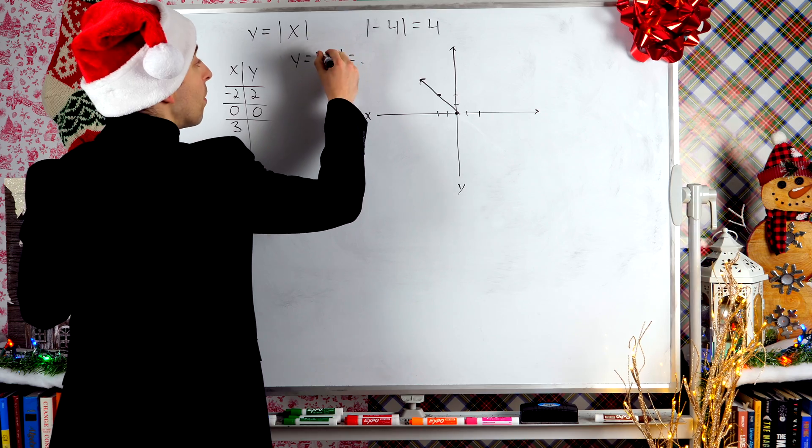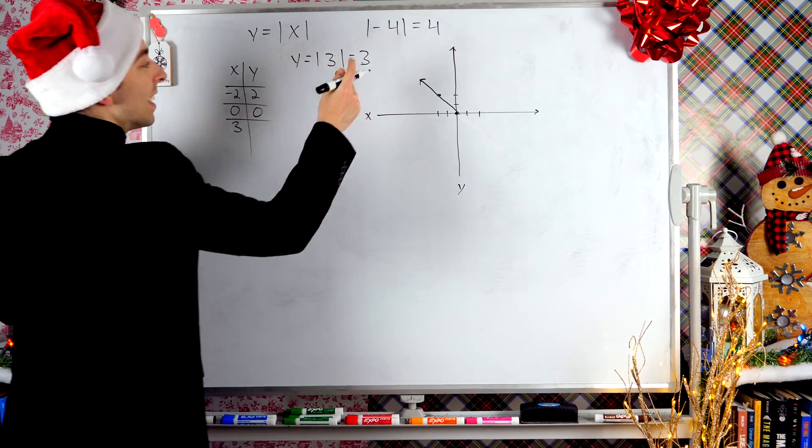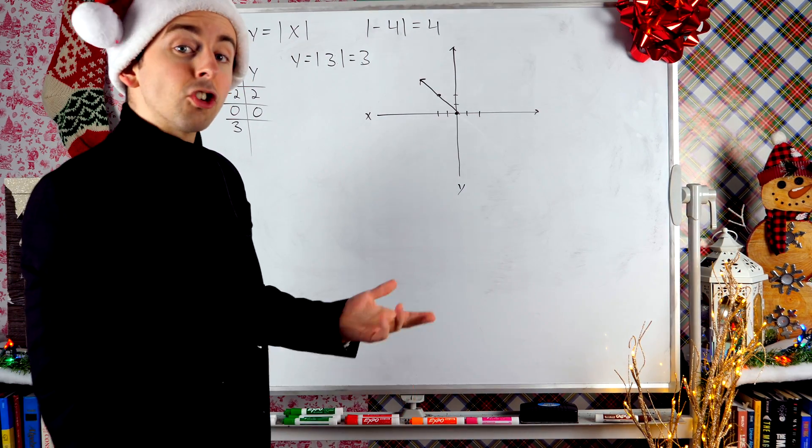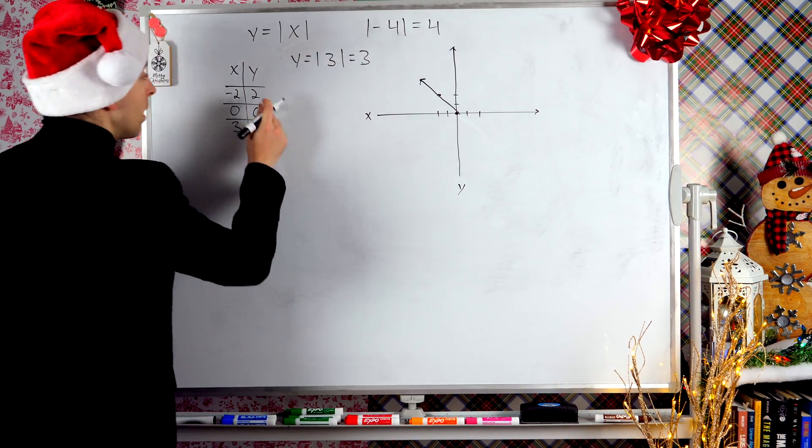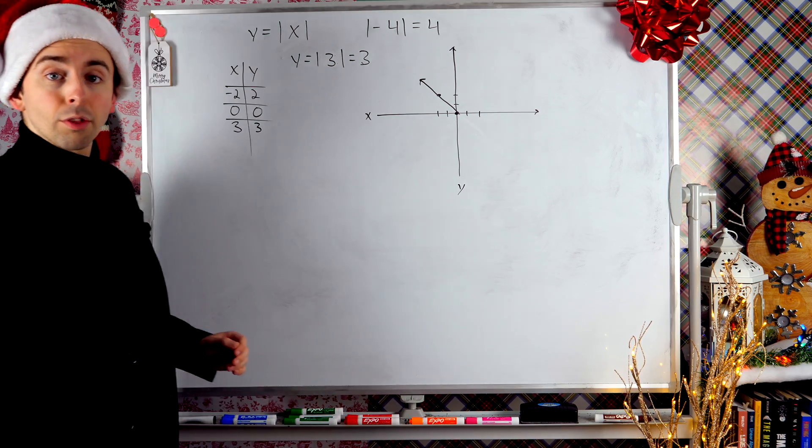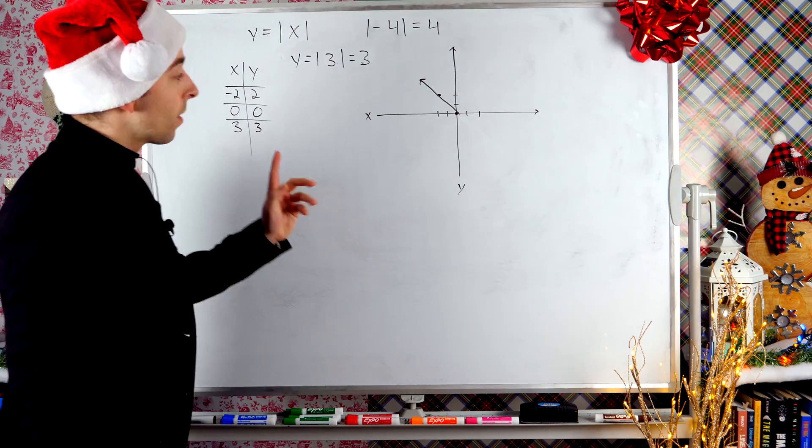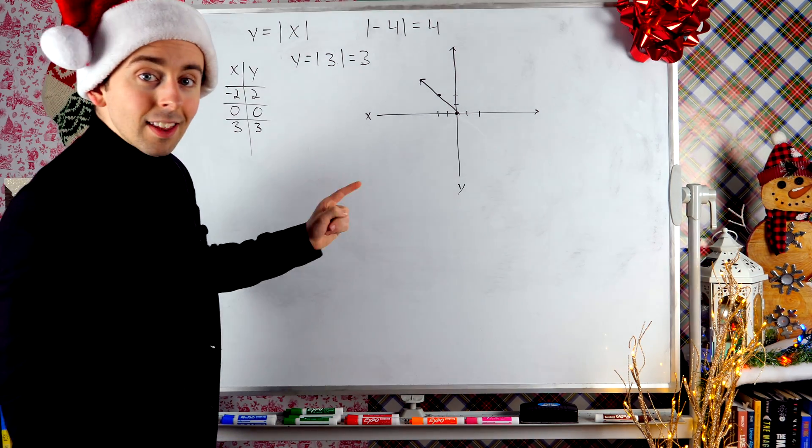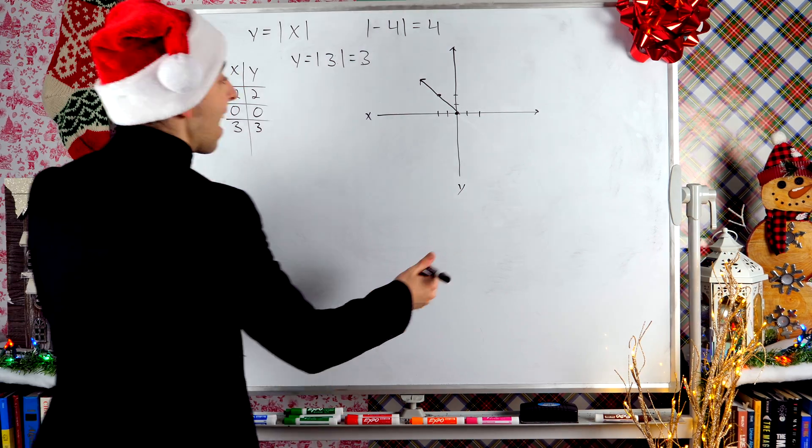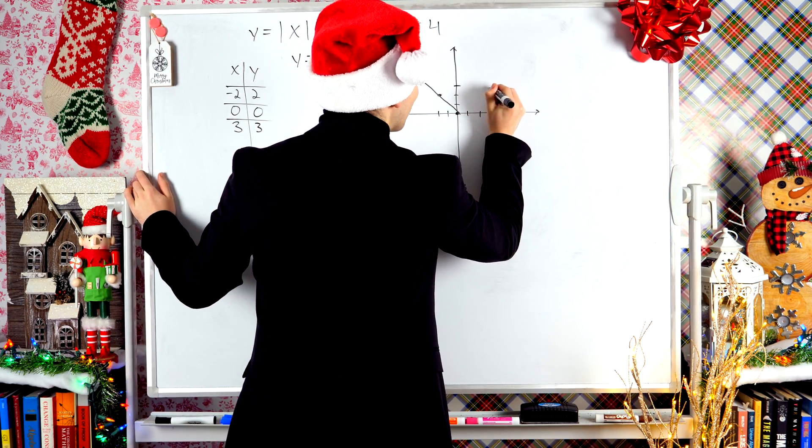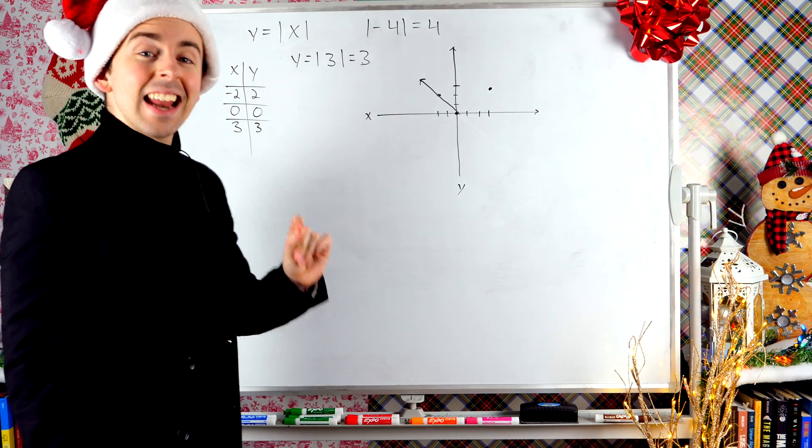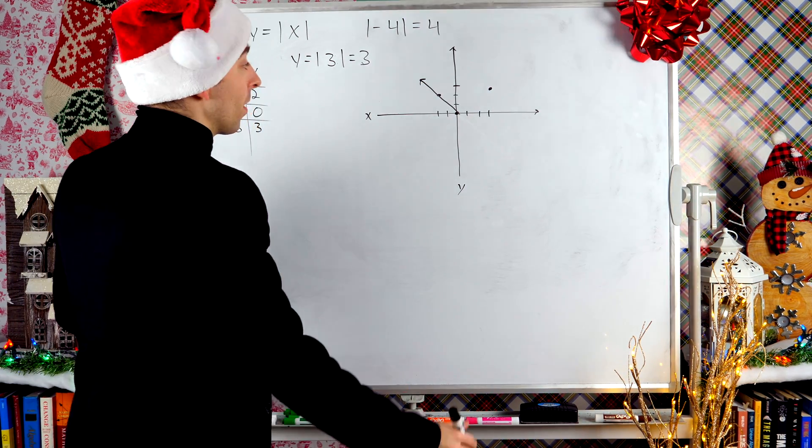If x is three, then y is the absolute value of three. And again, absolute value doesn't change positive numbers. Absolute value of three is just three. So the y that corresponds to three is three. Three, three is another point on this graph. So let's go ahead and plot that point. Gonna look something like that. Now I can finish drawing the graph.